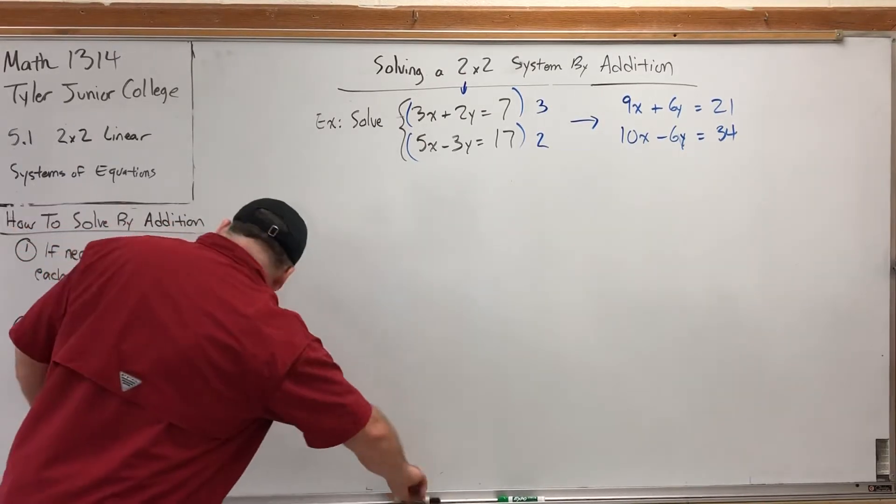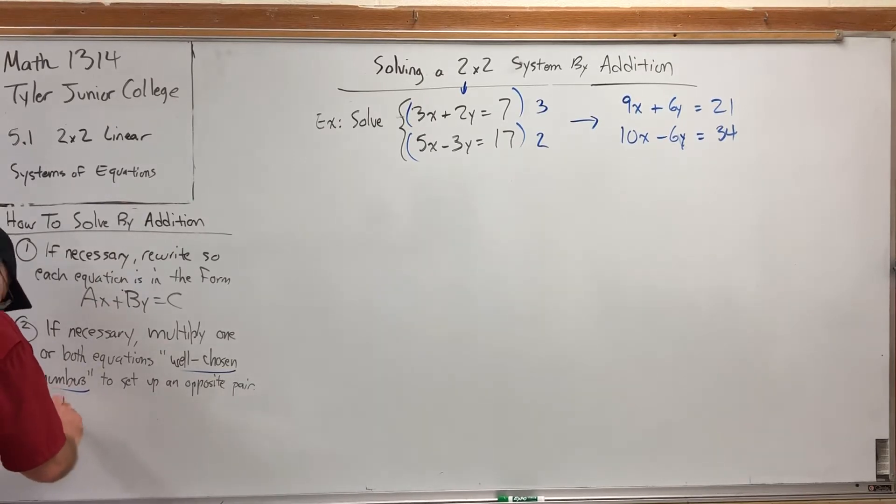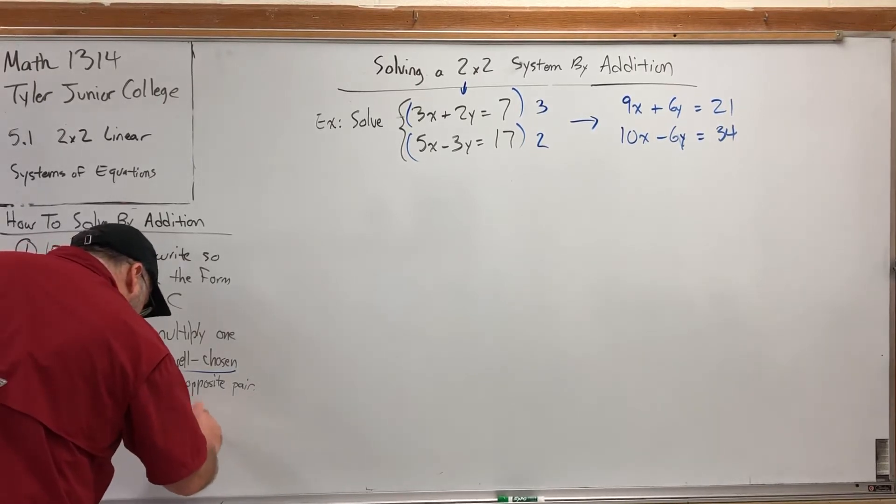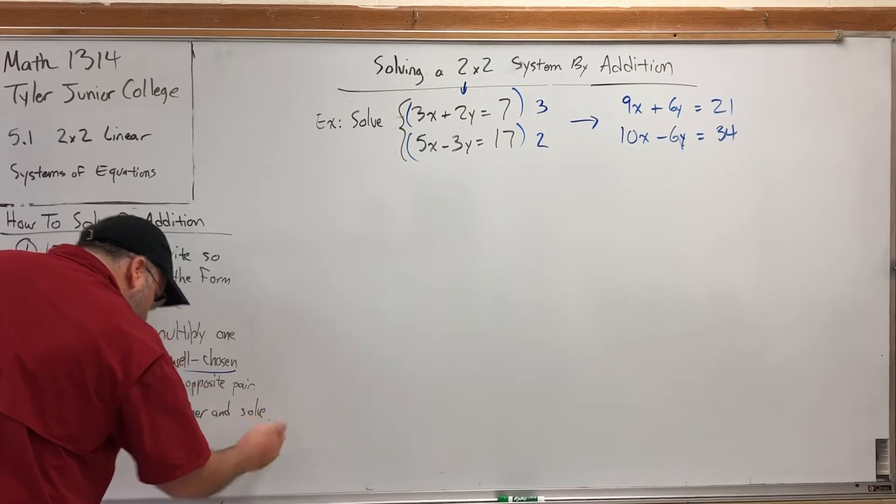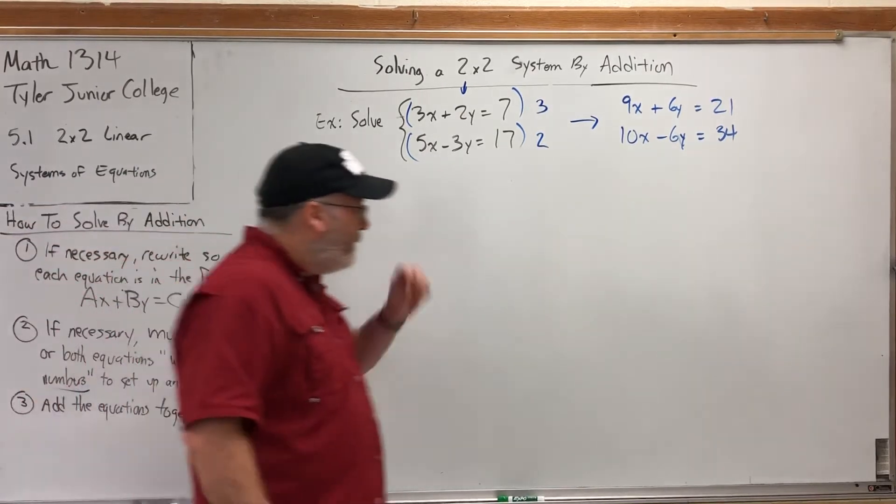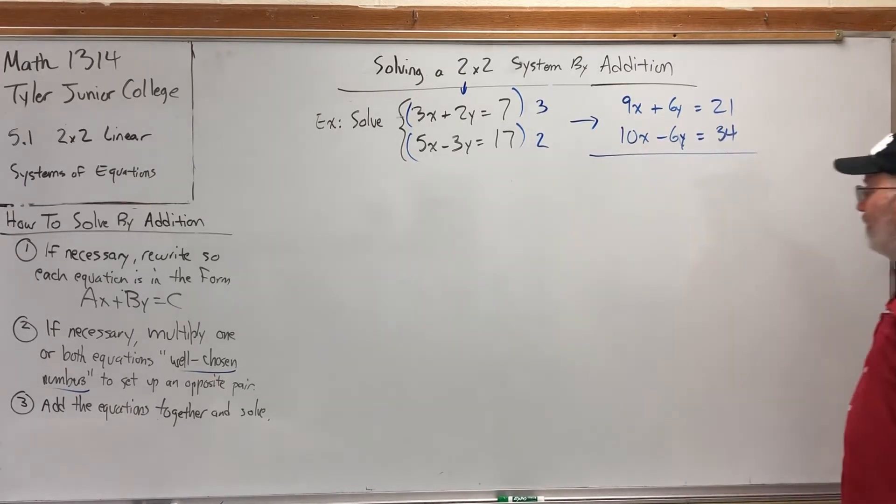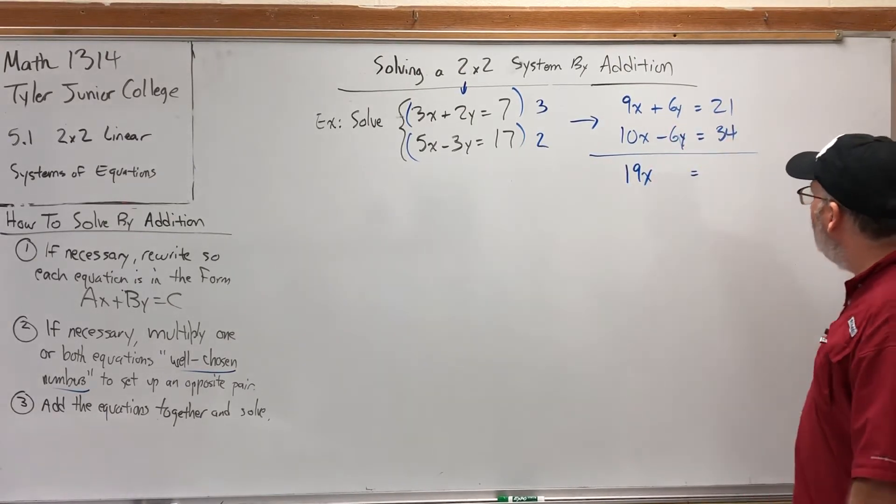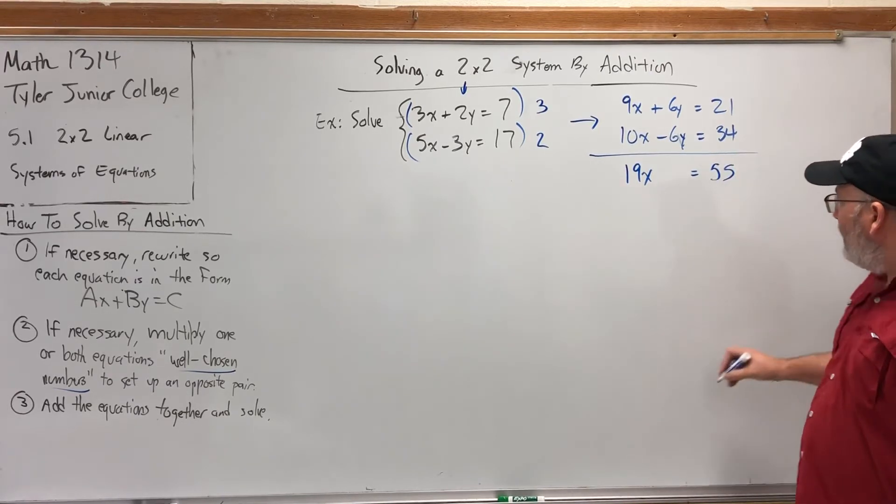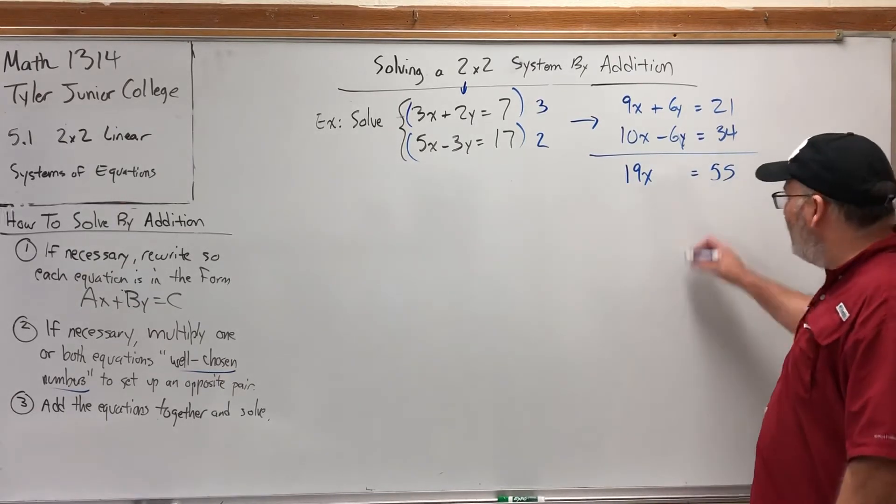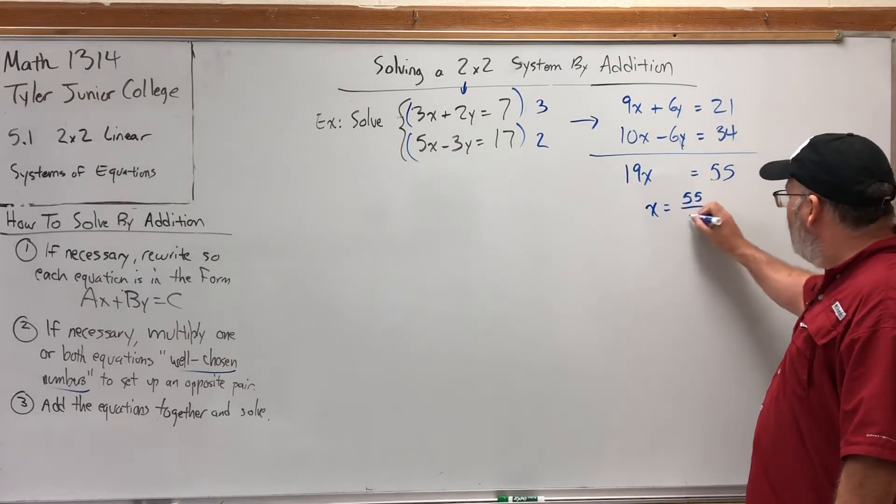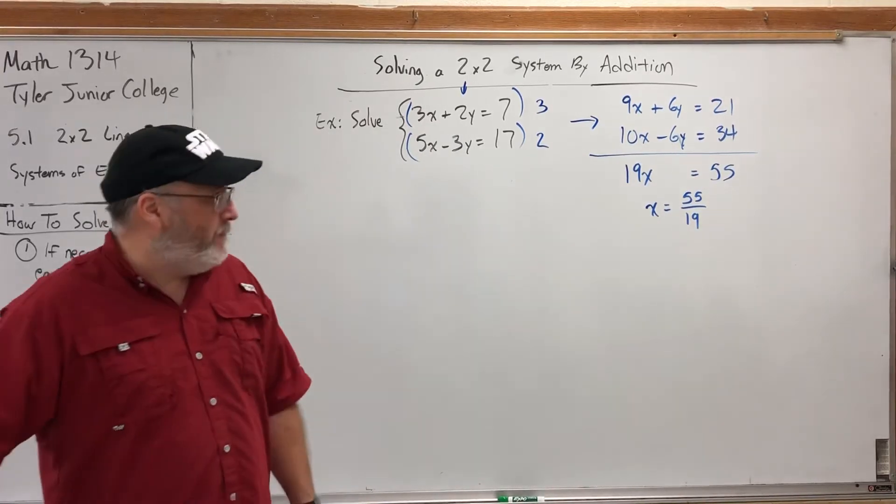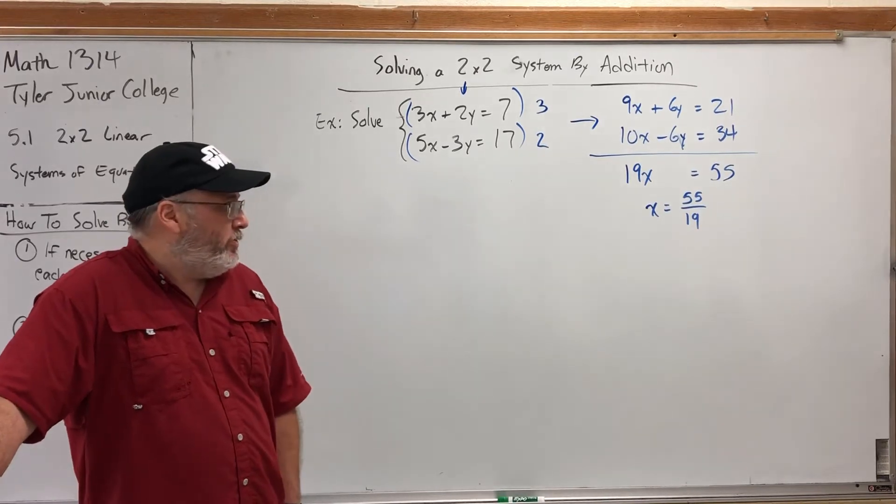Now that we have opposites, our third move is to add the equations together. Add the equations together and solve. We'll make that one move. I can split it into two. Step 3, add the equations. Step 4, solve. But this is the all-in-one move. If you're successful, something should cancel. It's going to be the y's. 9x and 10x is 19x. The y's cancel. 21 plus 34 is 55. And 18 out of 19 times, when you divide by 19, it comes out a fraction. This is one of those times. 55, 19's won't reduce. The only way 19 can reduce is by 19, since it's prime. But 55 won't reduce by 19, you can check. So that is the correct x value.